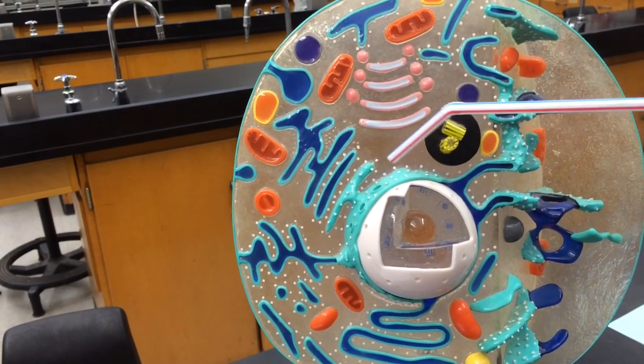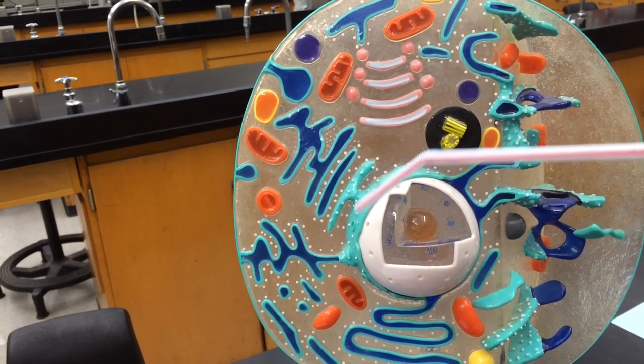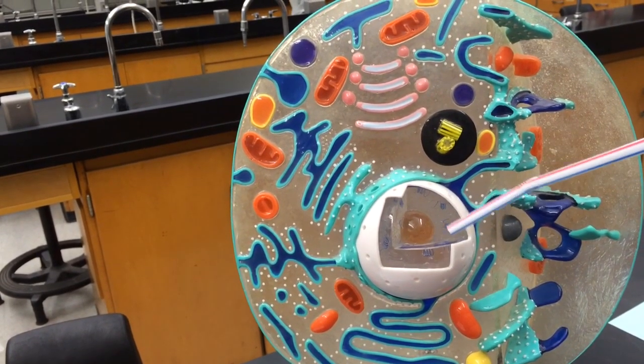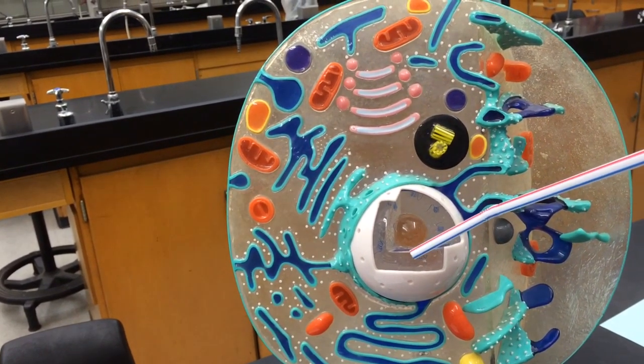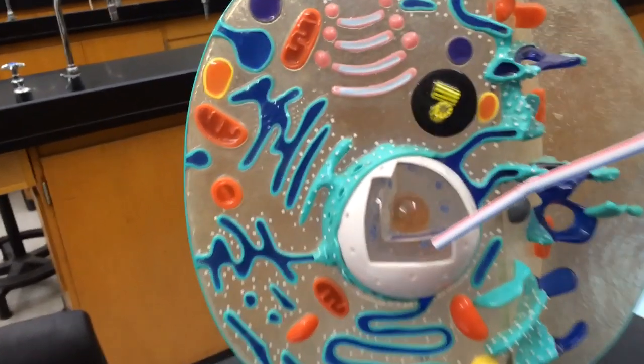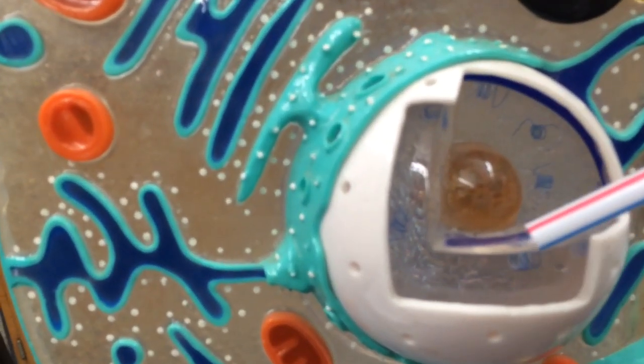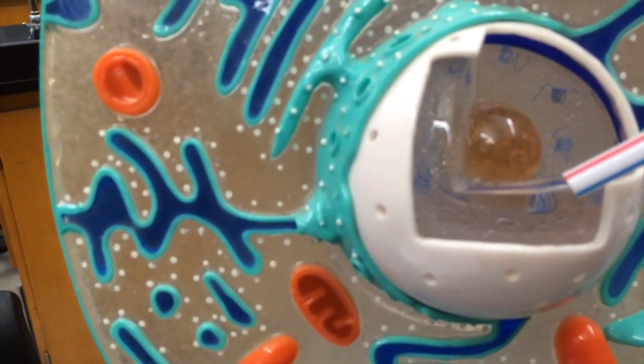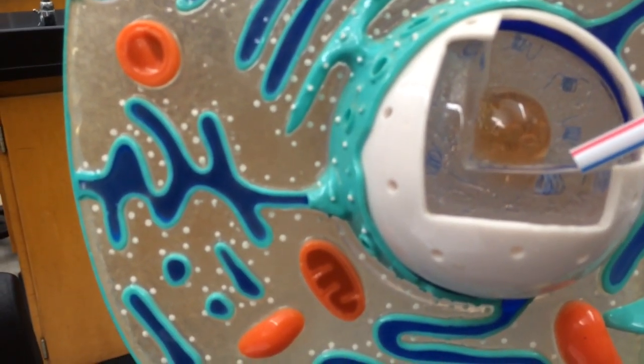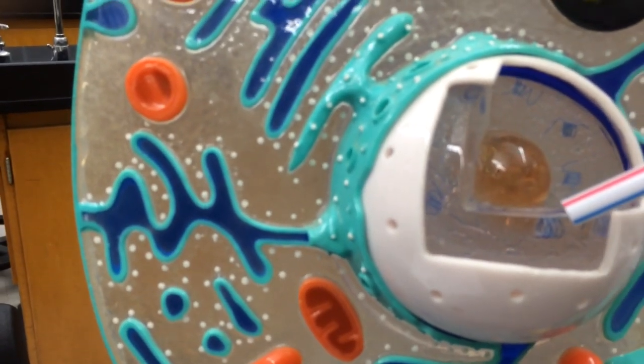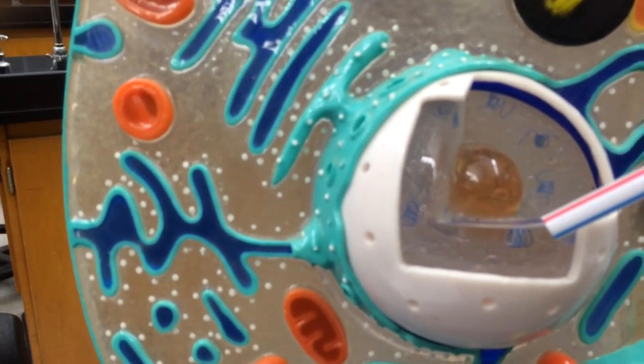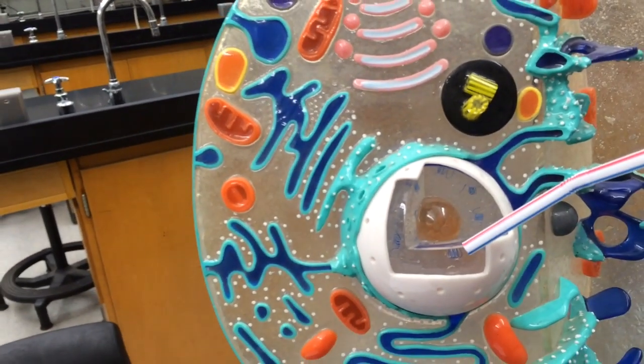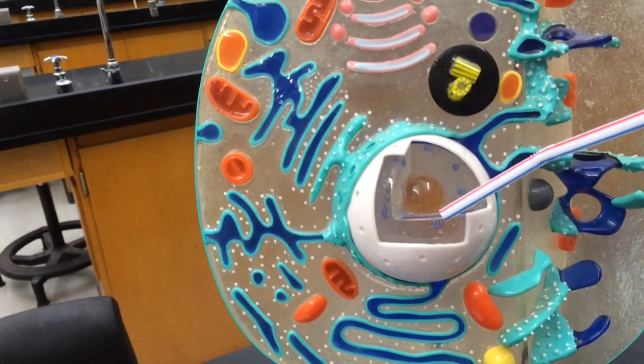So here we have the nucleus of the cell, and within the nucleus, we have actually the genetic material, DNA. And you can see the tiny little coil structures here. Now, in this state, we call these, we refer to these as chromatin. So we're not calling them chromosomes at this state. We just call them chromatin. So that is what the genetic material is at the moment.